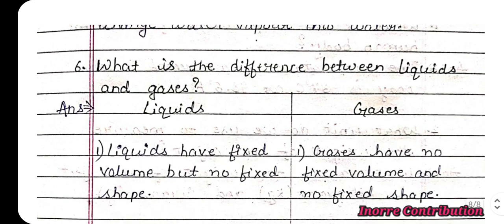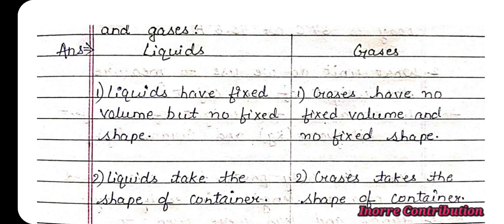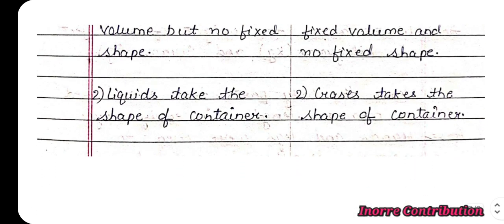Sixth question, what is the difference between liquids and gases? Liquids, first point, liquids have fixed volume but no fixed shape. Gases, first point, gases have no fixed volume and no fixed shape. Liquids, second point, liquids take the shape of container. Second point under gas, gases take the shape of container.